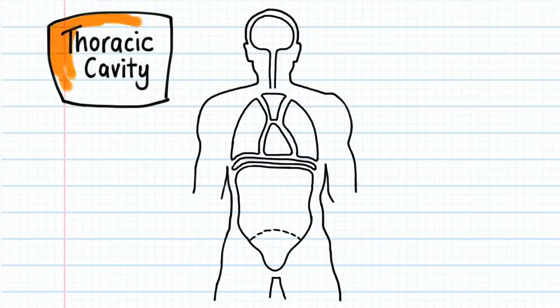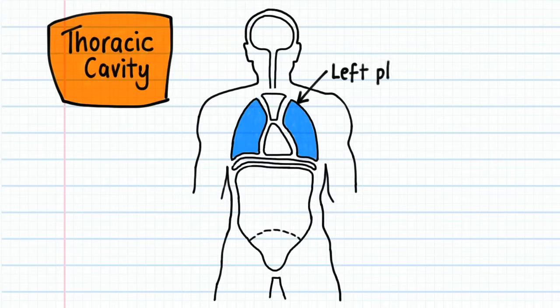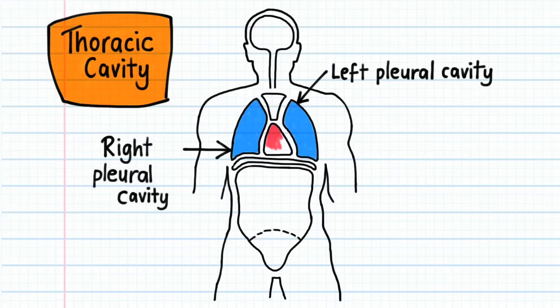The thoracic cavity can be subdivided into the left and right pleural cavities and a central pericardial cavity.